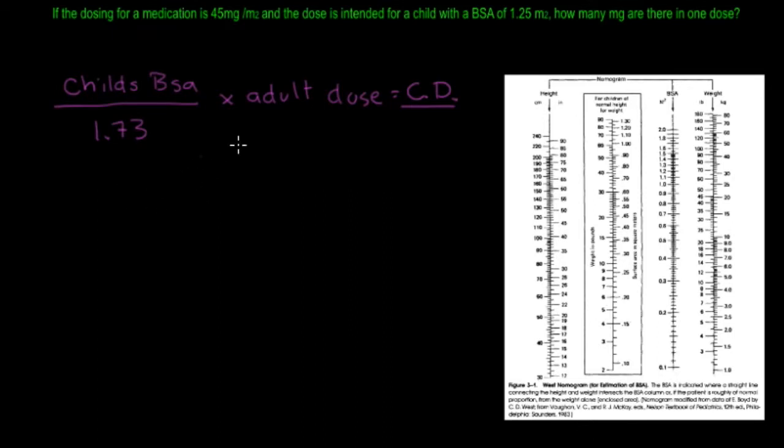BSA, we know that the child's BSA is 1.25, so we're going to put 1.25 meters squared over 1.73, multiply that by 45 milligrams, because that's going to be the dosing for the medication, the standard dosing for an adult patient.